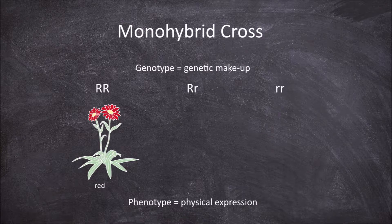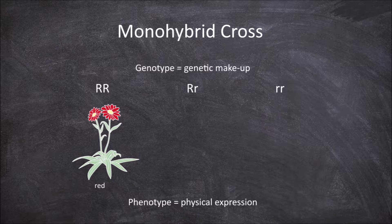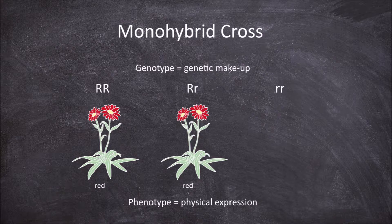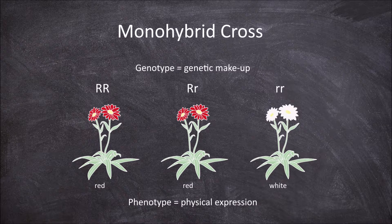Since big R is dominant over the recessive little r in the big R little r plant, they would also express as having red flowers. Those with two recessive little r's would have white flowers.